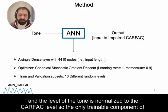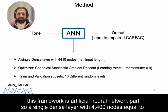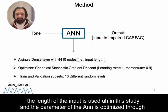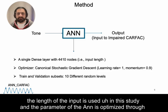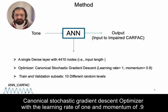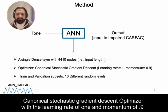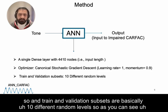The only trainable component of this framework is the artificial neural network. A single dense layer with 4400 nodes — equal to the length of the input — is used in this study. The ANN parameters are optimized through a canonical stochastic gradient descent optimizer with a learning rate of 1 and momentum of 0.9.